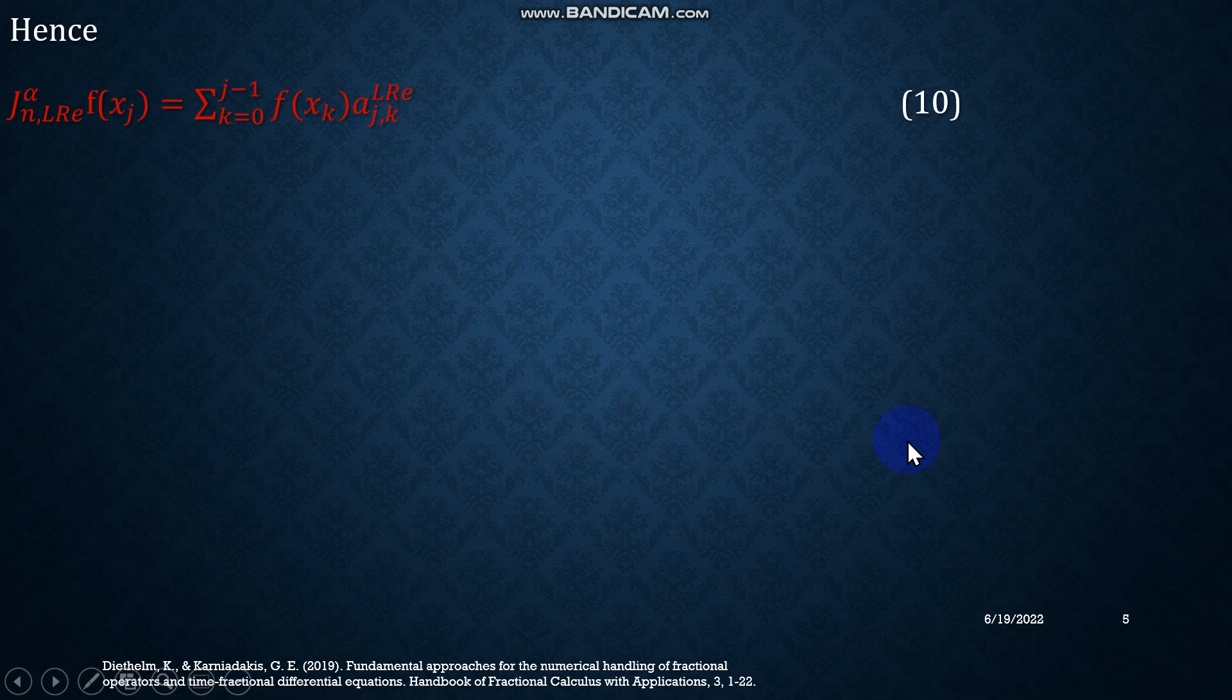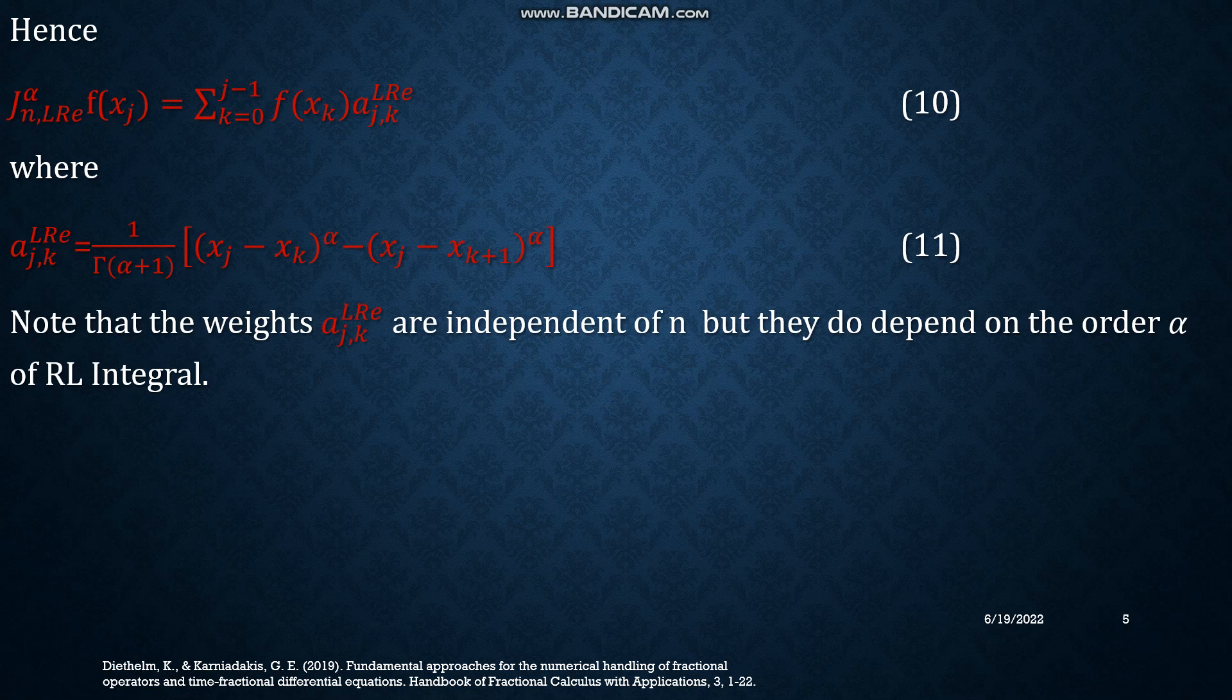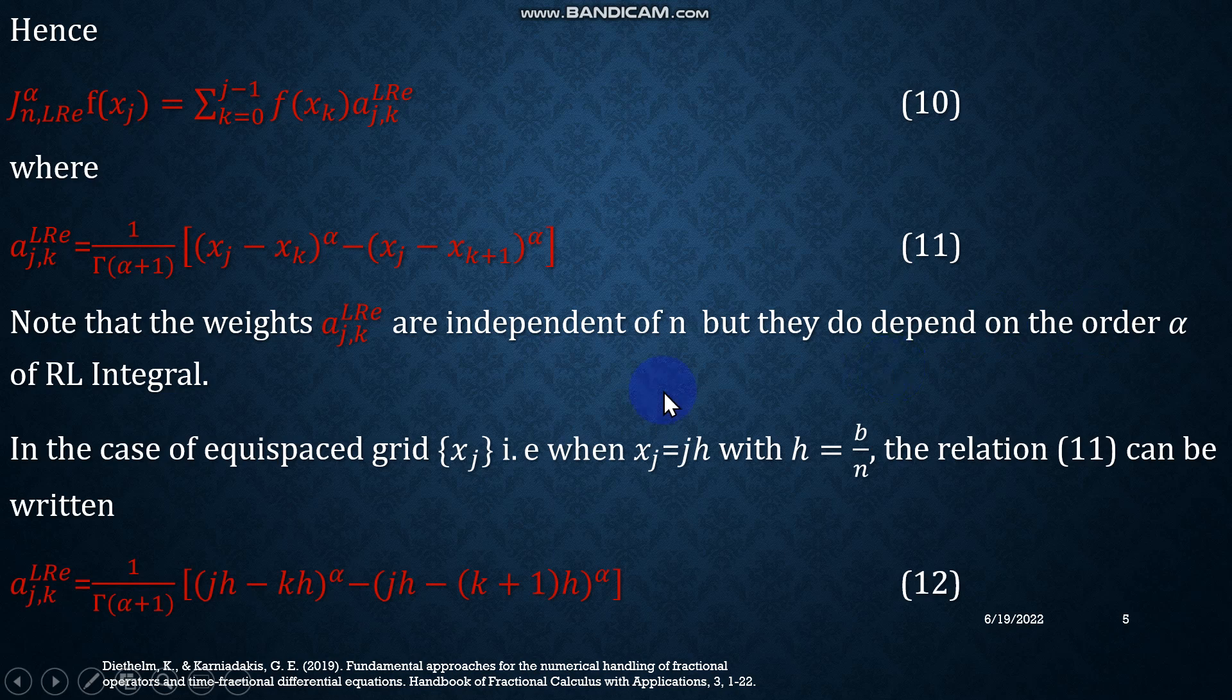After that, equation 10 can be written where these aⱼₖ I have written separately and called it equation number 11. So if you combine equations 10 and 11, you will have the same equation that we have previously, equation number 9. So note that this is what we call weights. aⱼₖ is actually known as weights, and they are independent of n but they depend on the fractional order α.